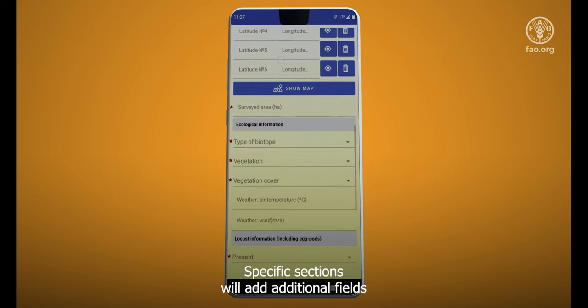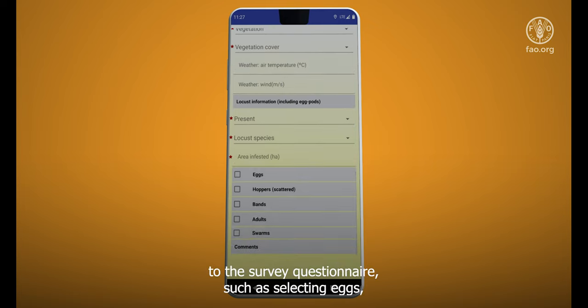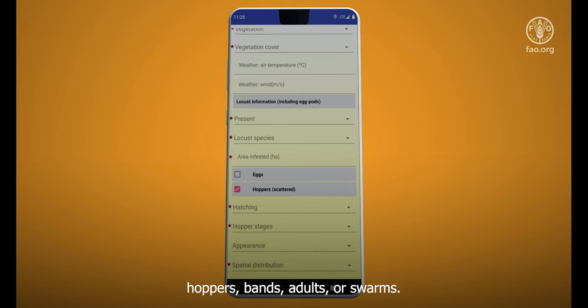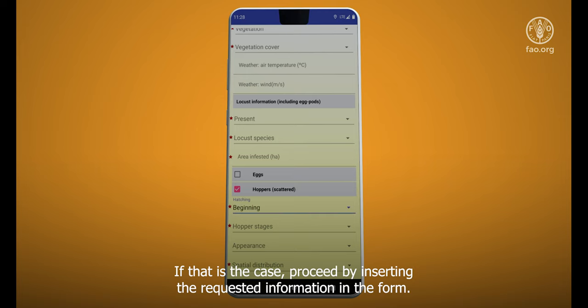Specific sections will add additional fields to the survey questionnaire, such as selecting eggs, hoppers, bands, adults, or swarms. If that is the case, proceed by inserting the requested information in the form.